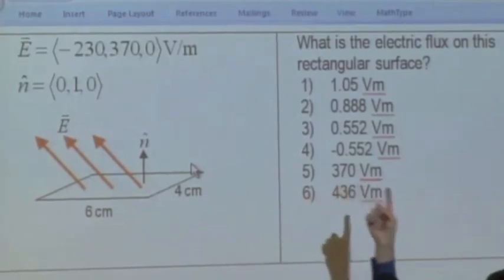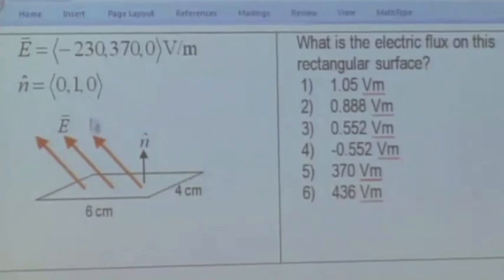And n-hat is going to be pointing in the positive Y direction. The electric field is uniform over this surface, and let's say the electric field is negative 230, positive 370, zero volts per meter. What's the electric flux on that surface?